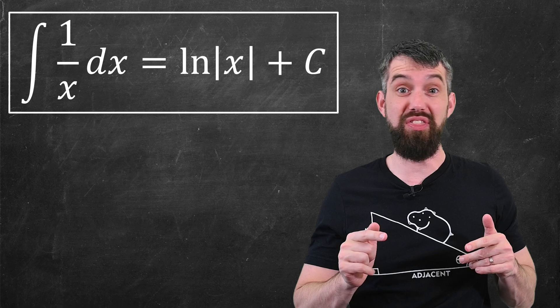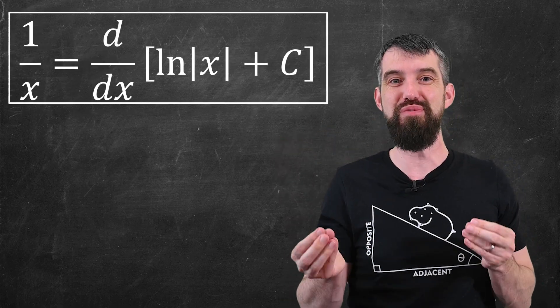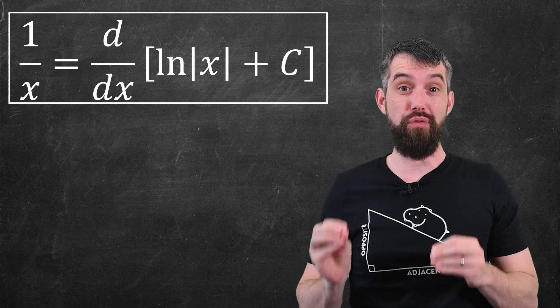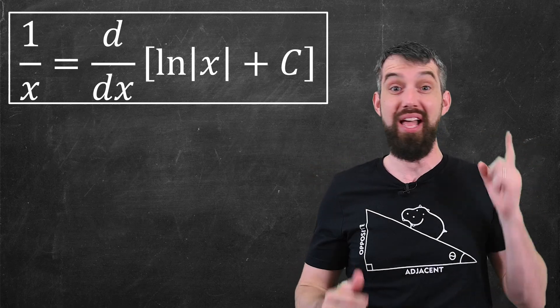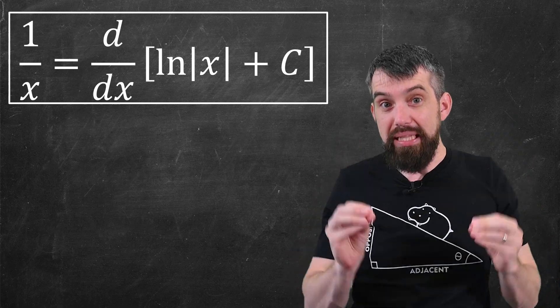and it's certainly true if I take it the other way around. The derivative of logarithm of absolute value of x plus c is certainly 1 over x. I've shown that just in my calculus course, for example. You can check out the links to that if you're interested.